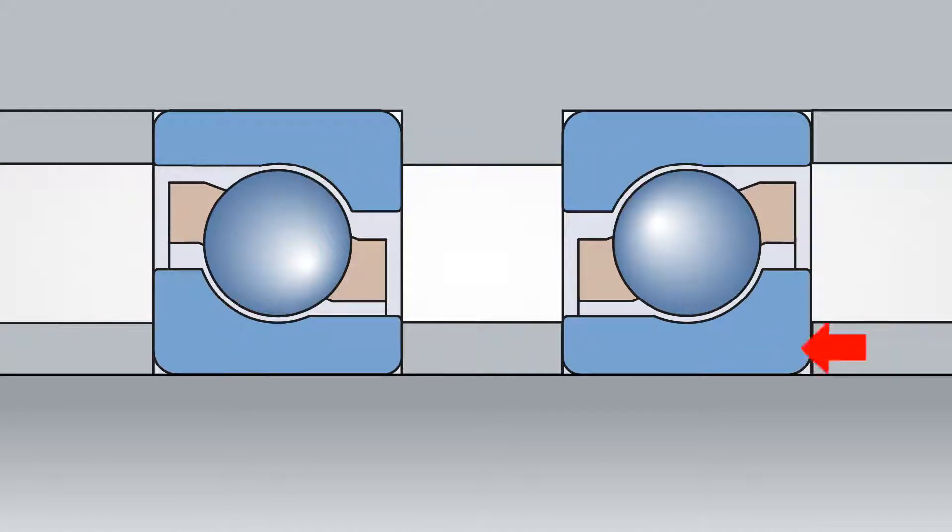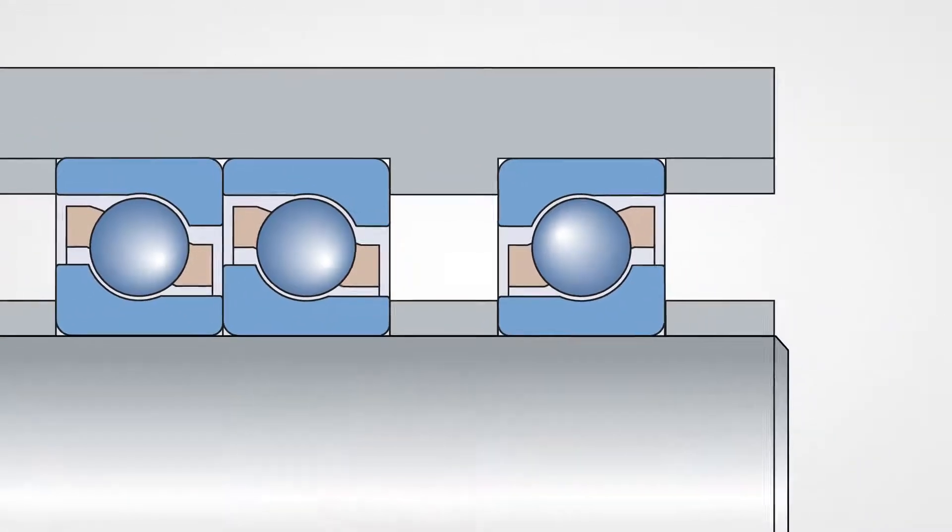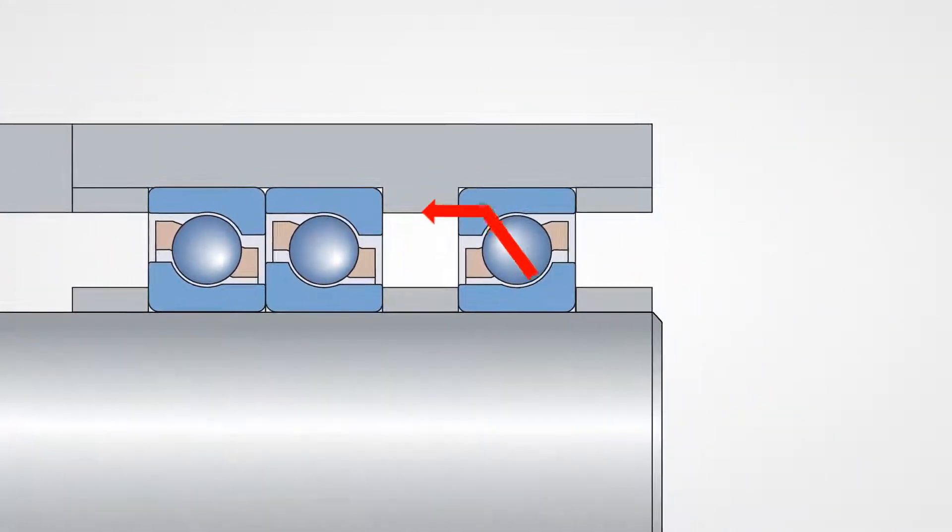In cases where the axial load in one direction is high, they can also be used in a tandem arrangement. Tandem arrangements still require an opposing matching bearing to locate and support the shaft.